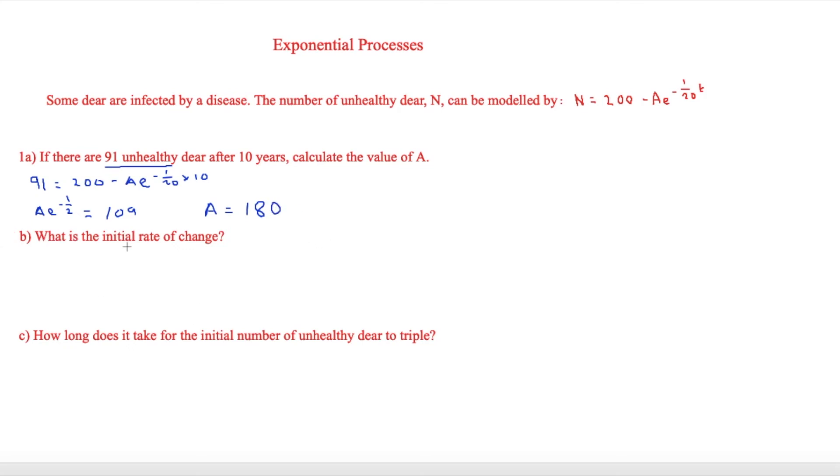The next question is asking what is the initial rate of change? This rate of change should imply that we're going to have to use some sort of differentiation. Let's differentiate 200 minus 180e to the minus 1 over 20t. That means dy over dx is going to be equal to, the 200 differentiates to give nothing, but then we've got minus 1 over 20 times by minus 180, and that's going to equal 9.